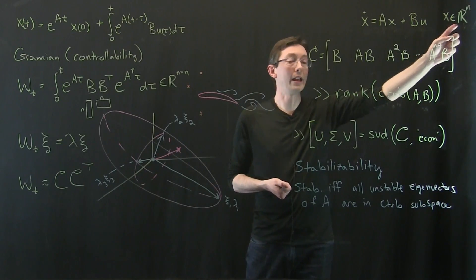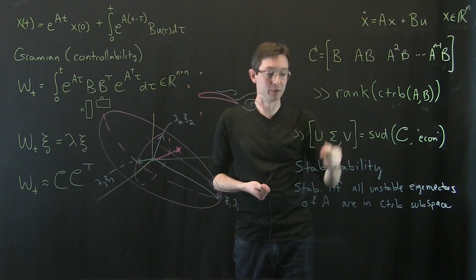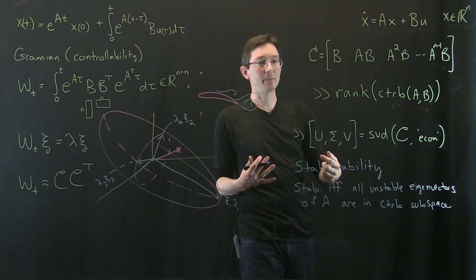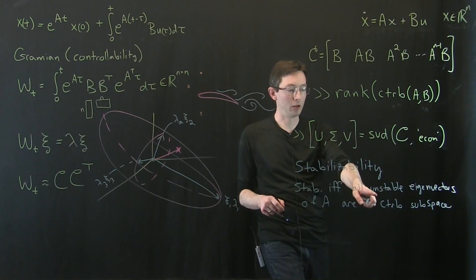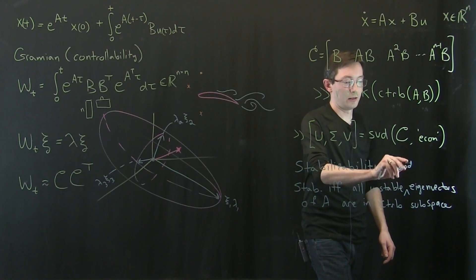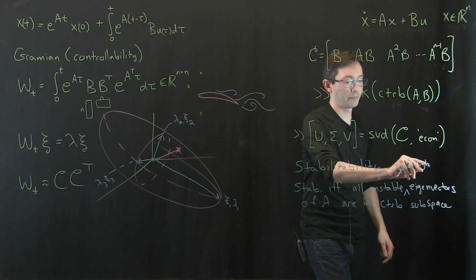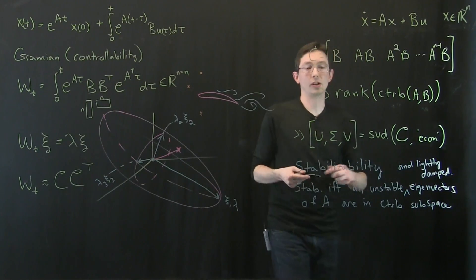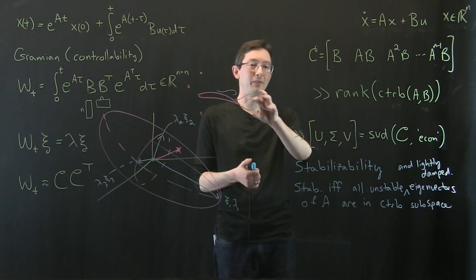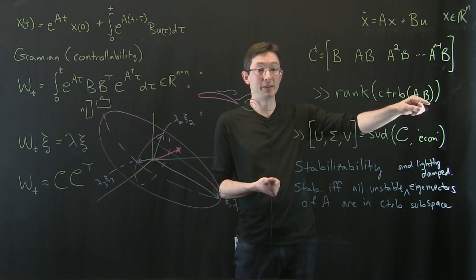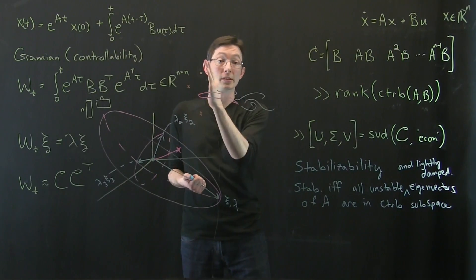So I might not be able to control all of Rn, but everything that's unstable I can control. And I, this is the normal definition, but I think a much more useful definition is that if all unstable and lightly damped. So it doesn't strictly speaking have to be just unstable. If there's something that's kind of marginally stable or barely stable, I also want that to be in my controllable subspace so that I can make it more stable.